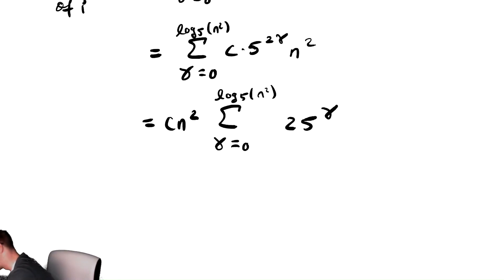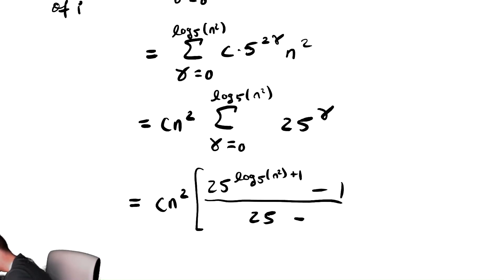And now having done all this factoring out the cn squared and simplifying the 5 to the 2 gamma, we can now use our formula for a finite geometric sum as we've seen a couple of times in the past. So this is equal to cn squared times the common ratio to the top bound, log base 5 of n squared, plus 1, minus 1, divided by the common ratio, 25, minus 1.